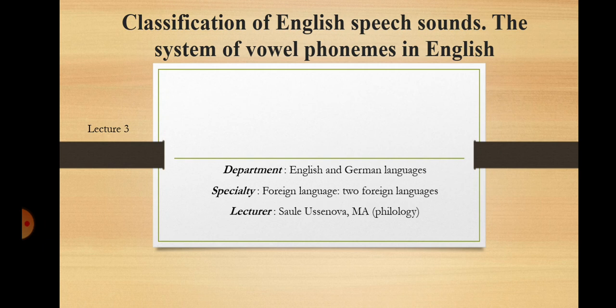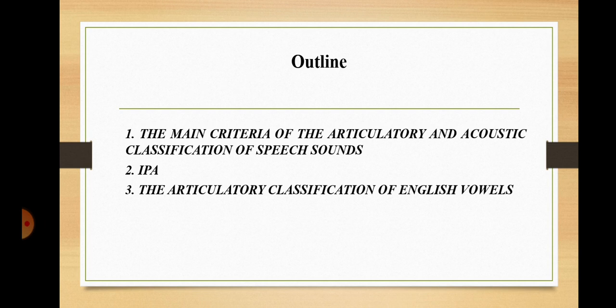Welcome again to our lectures on language theory. This is the third lecture within the course, in the first module of theoretical phonetics. The lecture is being delivered specially for students whose speciality is foreign languages, at the Department of English and German Languages. The theme of this lecture is the classification of English speech sounds and the system of vowel phonemes in English. The outline includes the main criteria of articulatory and acoustic classification of speech sounds, the International Phonetic Alphabet, and the articulatory classification of English vowels.